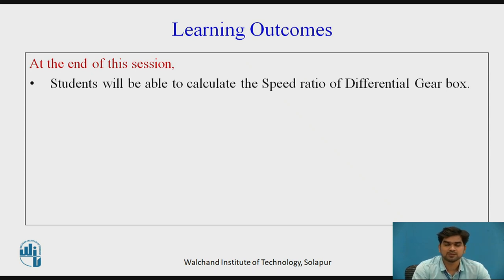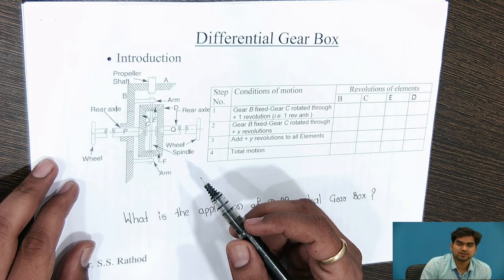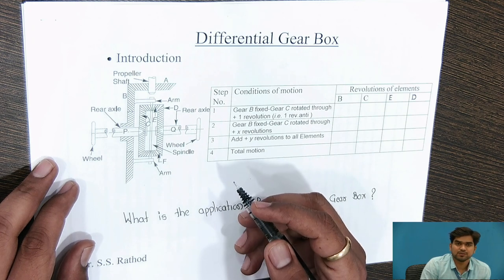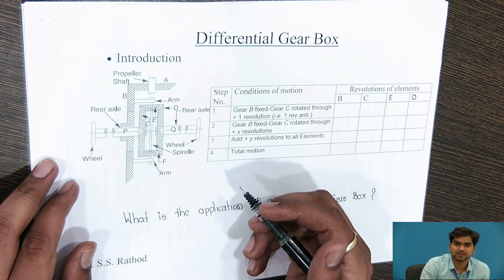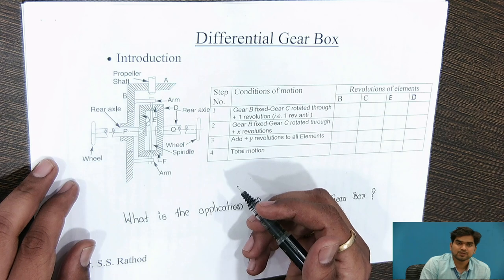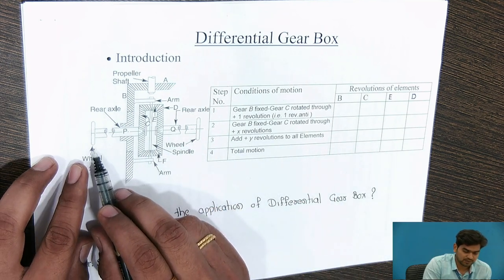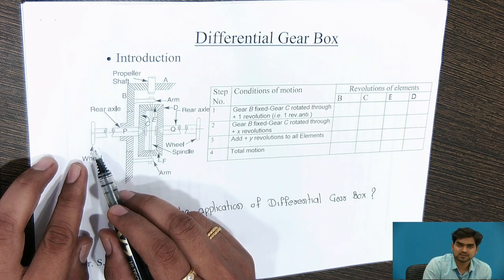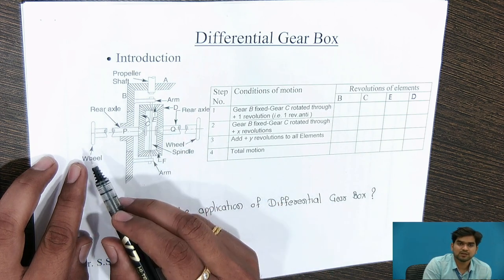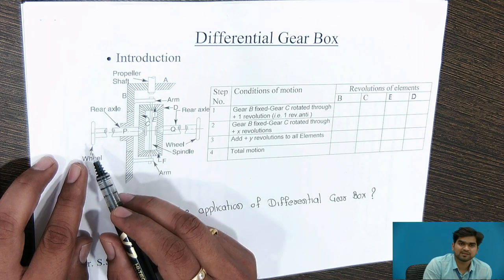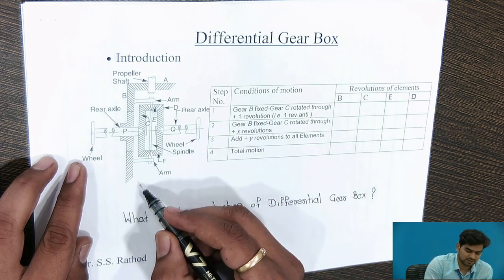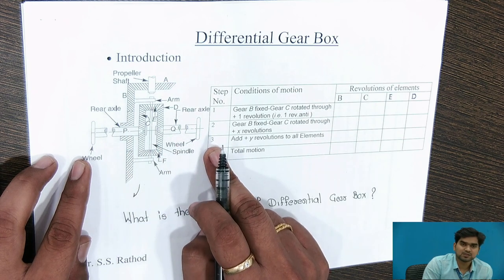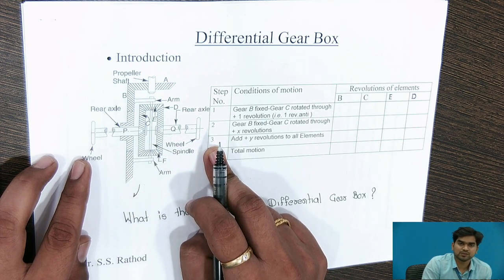Under this topic, the learning outcome is: at the end of this session, the student will be able to calculate the speed ratio of the Differential Gearbox. The Differential Gearbox is used for transmitting motion from the engine to the rear axle. The second and very important application is to vary the speed between the inner wheel and the outer wheel. When taking a turn, the speed of the inner wheel should be less than that of the outer wheel, because the inner wheel covers lesser distance than the outer wheel.